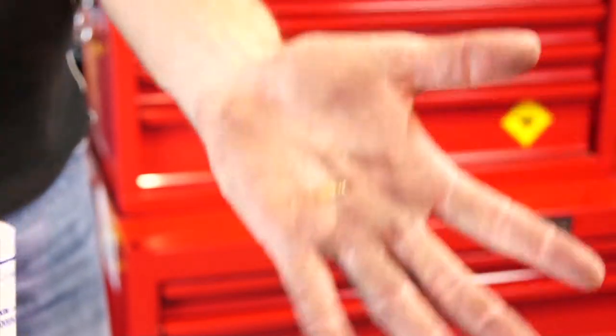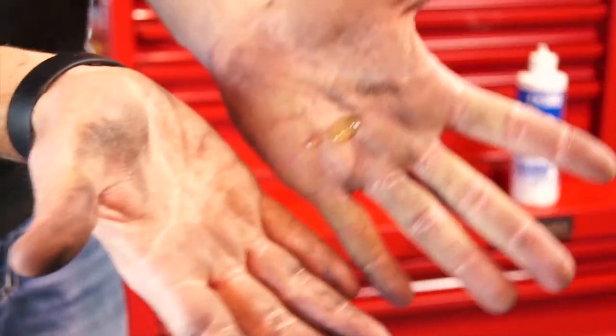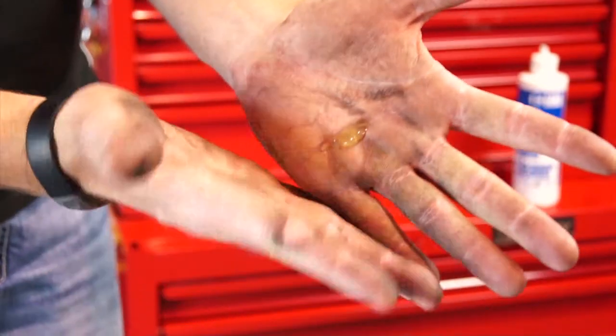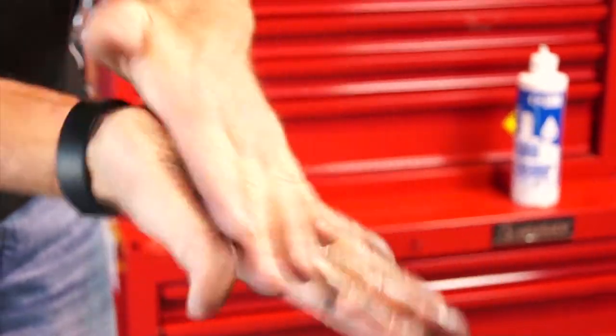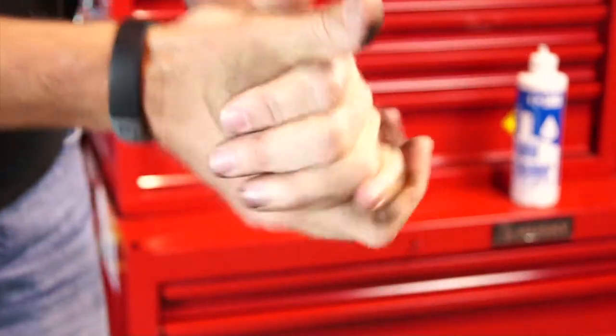Just place a small dab of the clear lotion in the palm of your hand and begin working it into your skin. In just a few seconds, you can see the dirt being lifted from your hands.